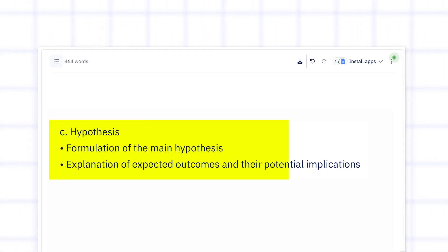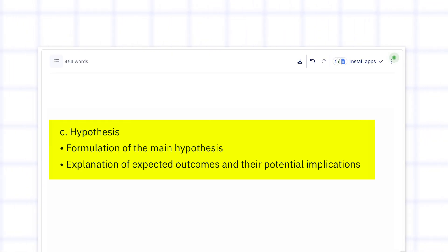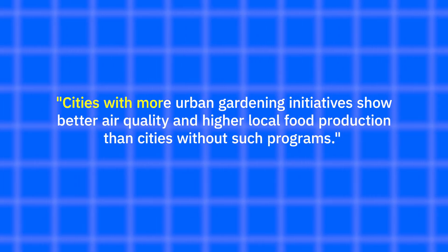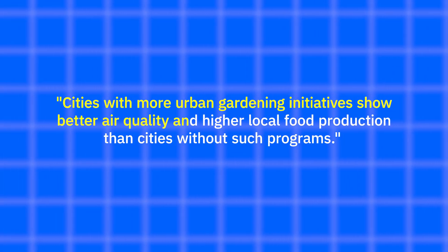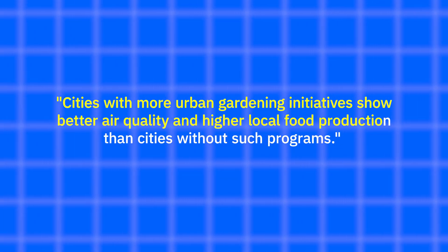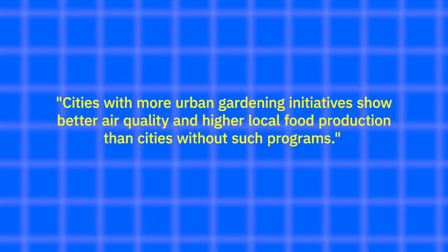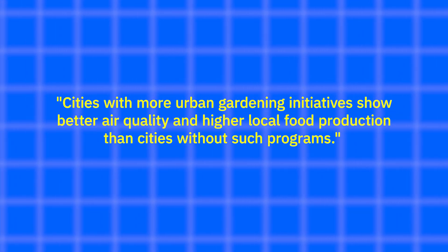Some proposals also include a hypothesis. A hypothesis is just a prediction — what you expect the result to be based on the information you already have. For example: cities with more urban gardening initiatives show better air quality and higher local food production than cities without such programs. Having a hypothesis helps give direction to your research. It's like saying, here's what I expect to happen.